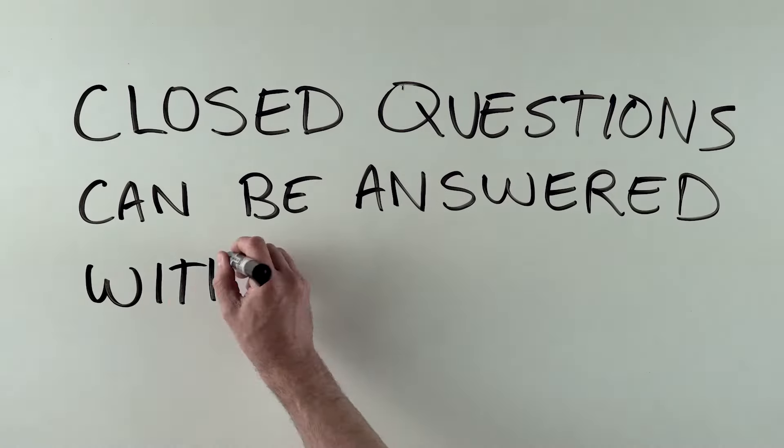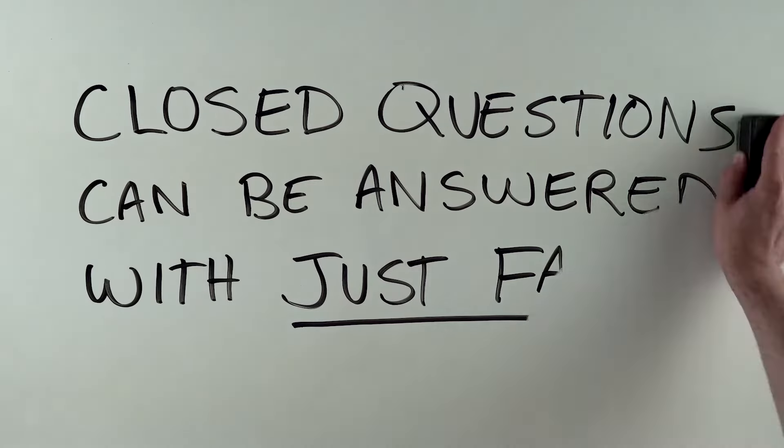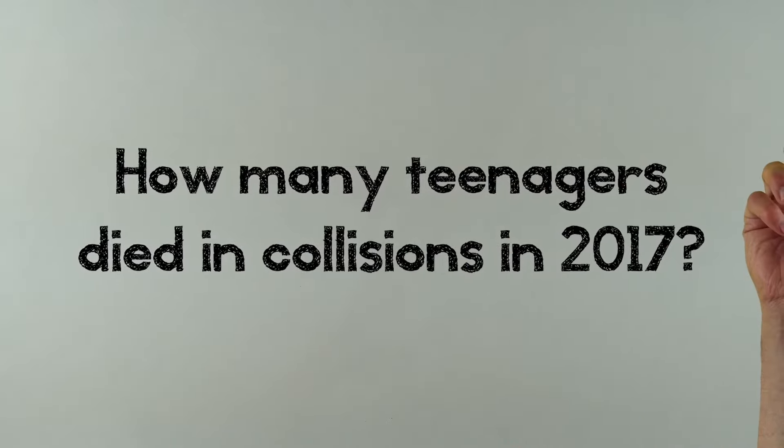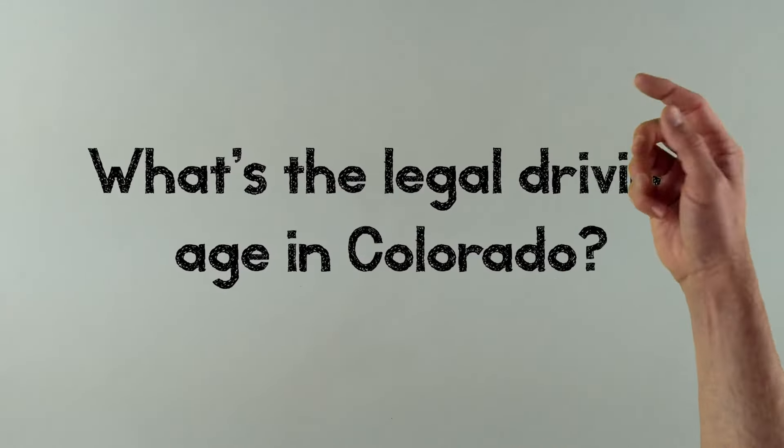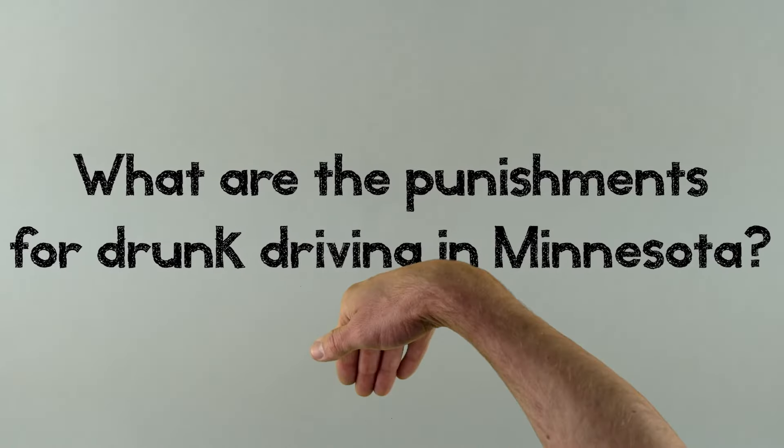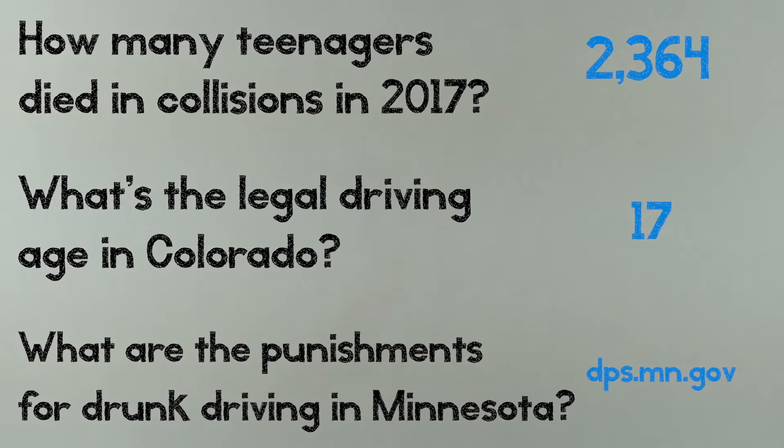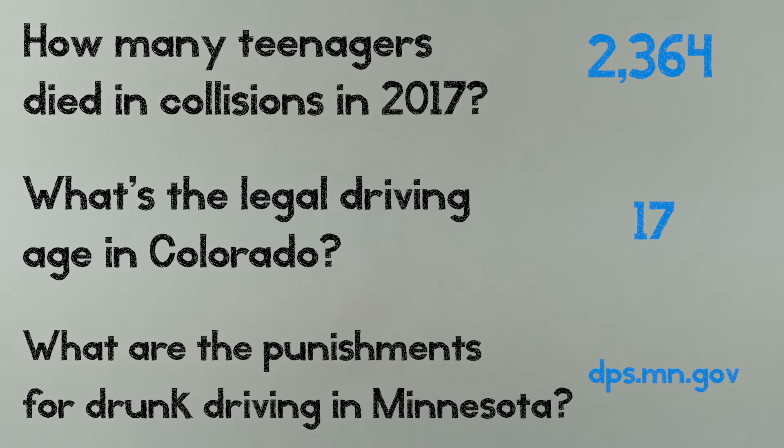Unlike an open-ended question, a closed question actually has a right or wrong answer. Here are some examples. How many teenagers died in collisions in 2017? What's the legal driving age in Colorado? What are the punishments for drunk driving in Minnesota? Anyone who asks these questions will come up with the same answers, because they're facts, nothing that requires interpretation.